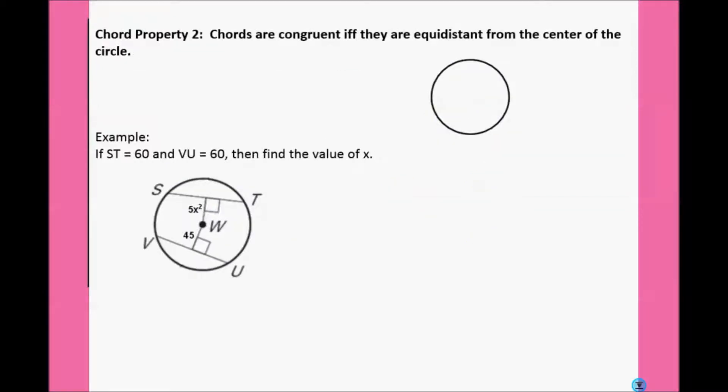Our next rule, chords are congruent if and only if they're equidistant from the center. So, let's say here's our center. From here to a chord, where it makes the right angle, this chord makes the right angle. If these are congruent, then the entire chord is congruent to this entire chord.